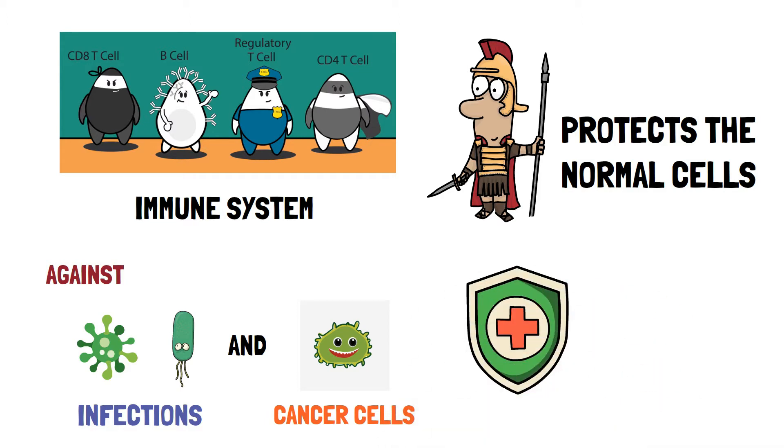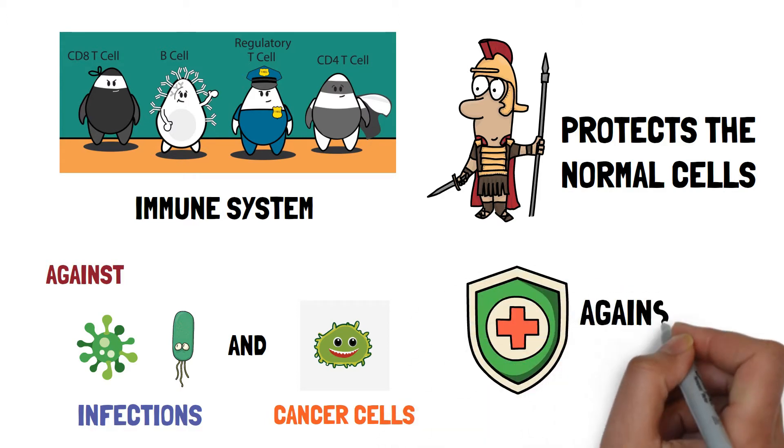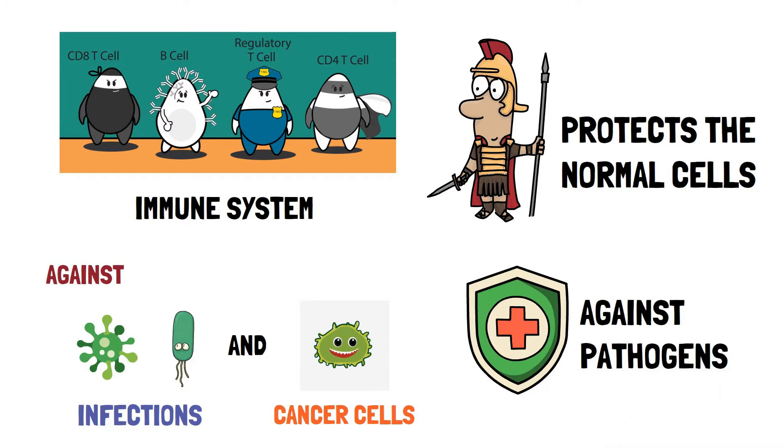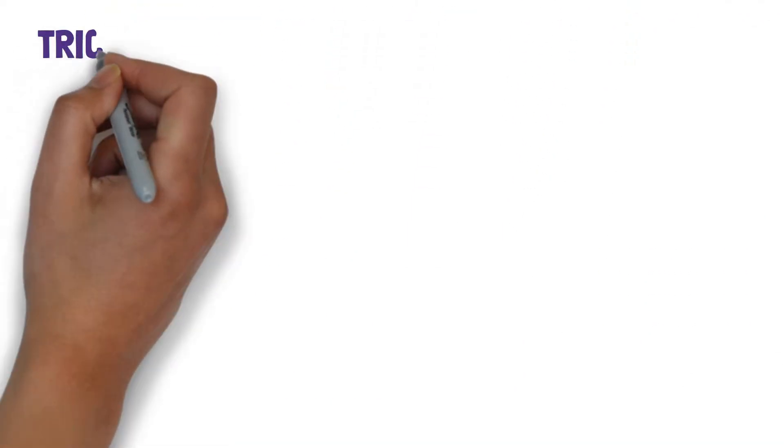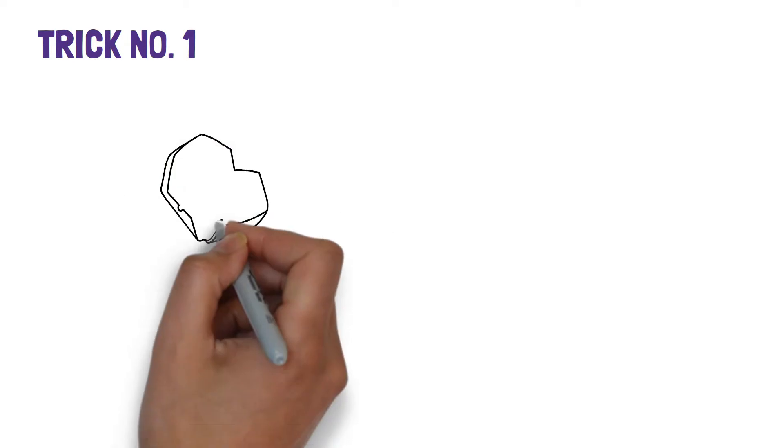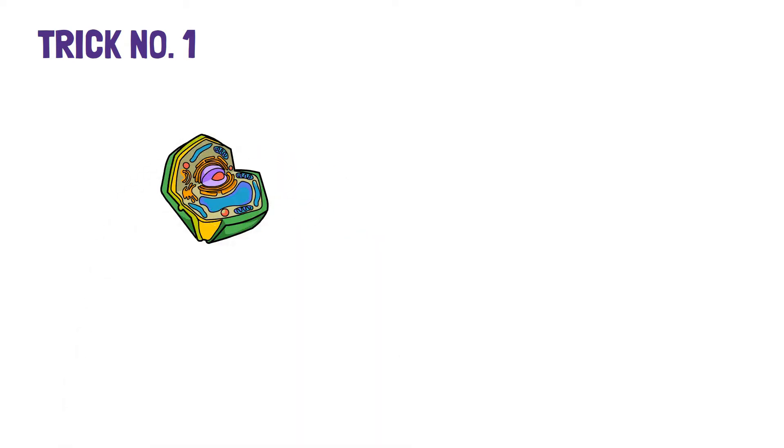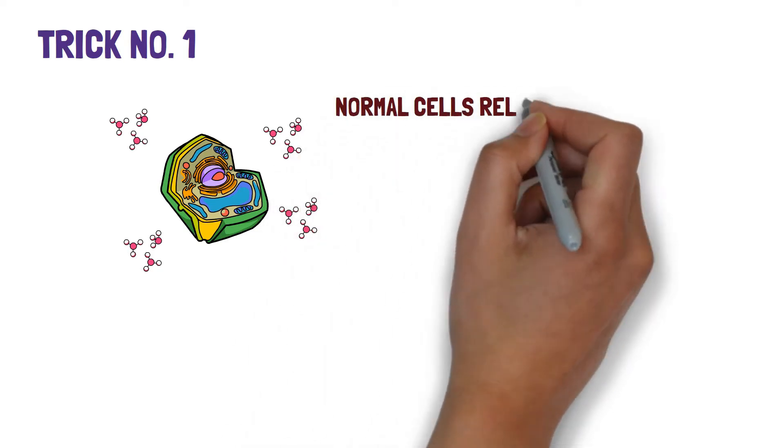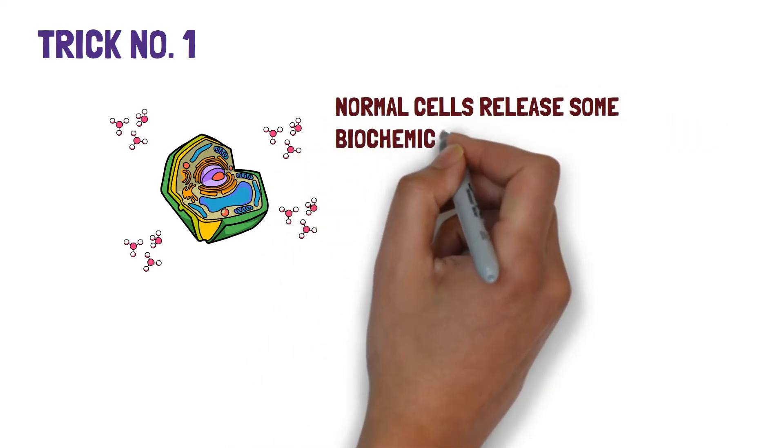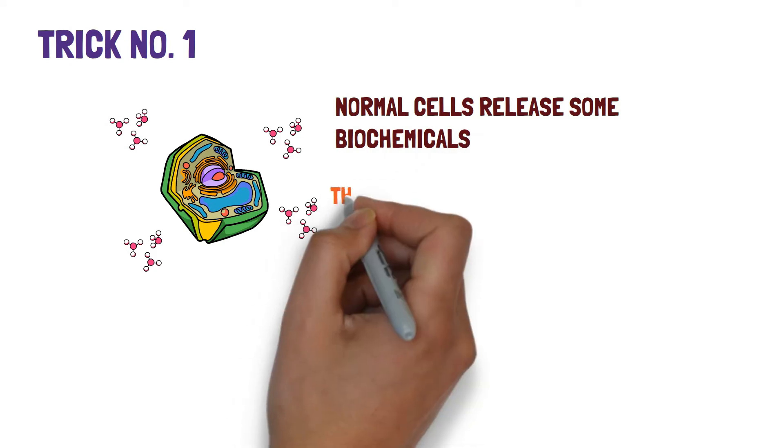So there are some tricks the cancer cells use to evade the immune system. The trick number one the cancer cells use to evade the immune system is that the cells in the body are always active and they are programmed to release some biochemicals while functioning normally to indicate their normal physiology.